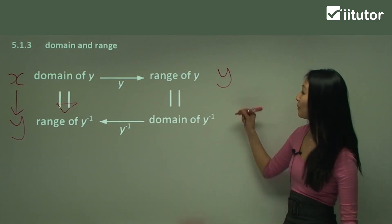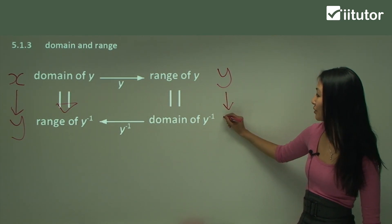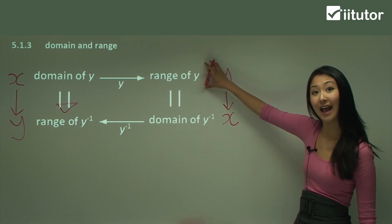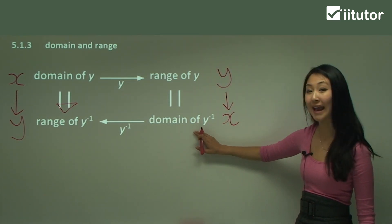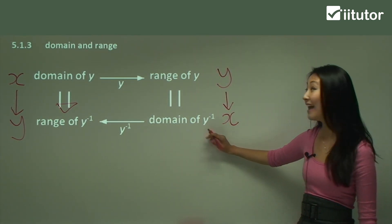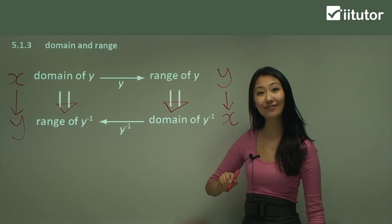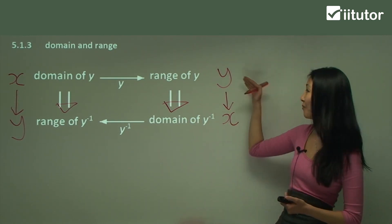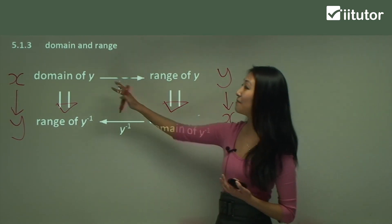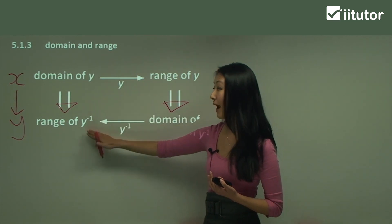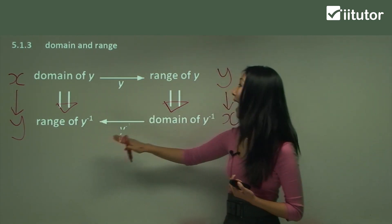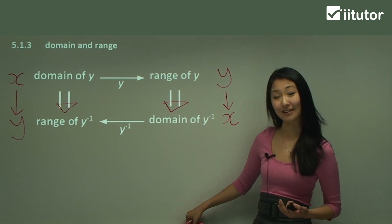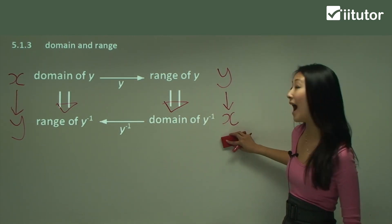So similarly, when we're going from y to x, you're going to be going from the range of the original function and that's going to become your domain of your inverse. So we're going from range to domain. So I want you to think about, because we're changing from x to y and y to x, essentially, your domain becomes the range of the inverse and your range becomes the domain of the inverse. And I think that makes a lot of sense when you see why that is.